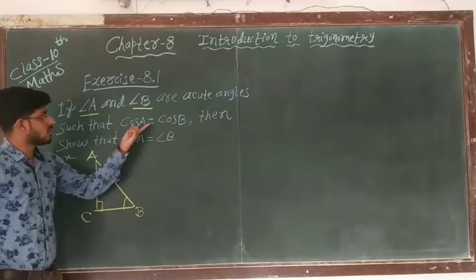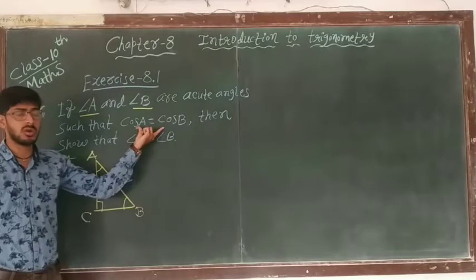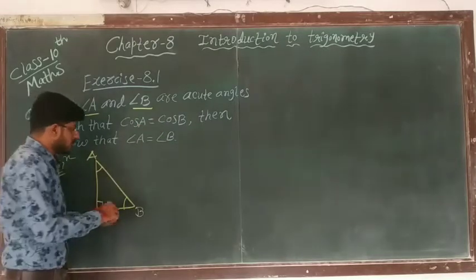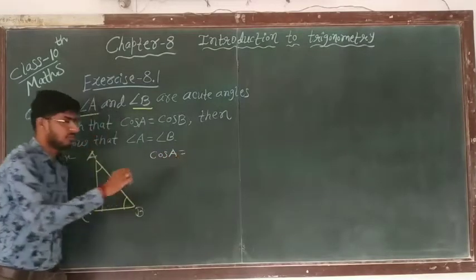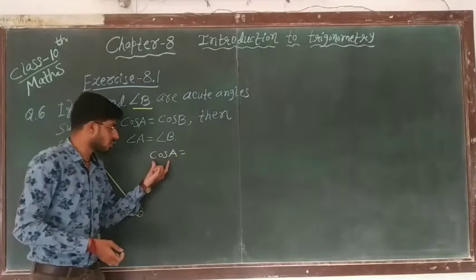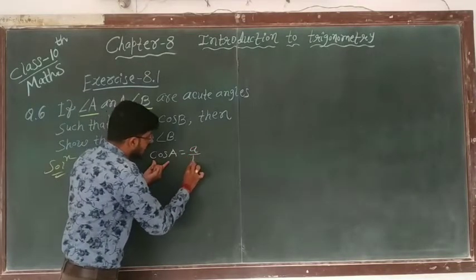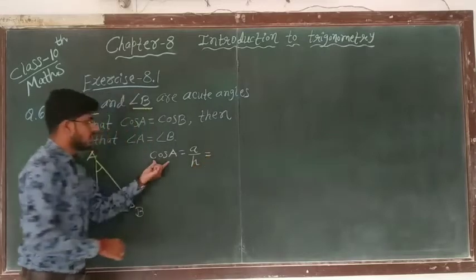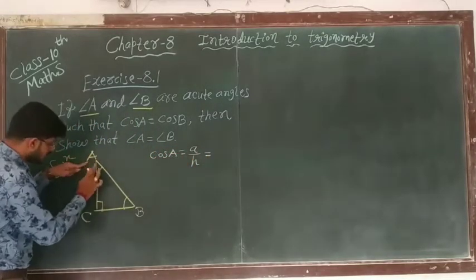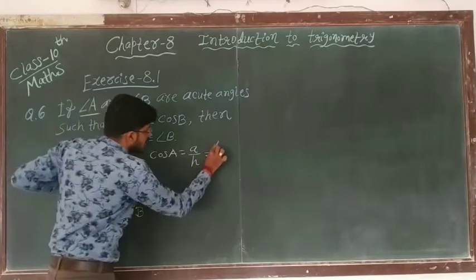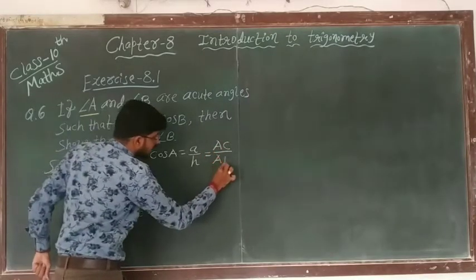Given that cos A equal to cos B. Also one condition is given: cos A equal to cos B. Cos A, the formula of cos is adjacent side upon hypotenuse. So we can write adjacent side of angle A is AC and hypotenuse is AB, so we can write AC upon AB.